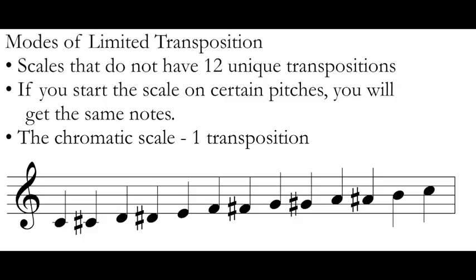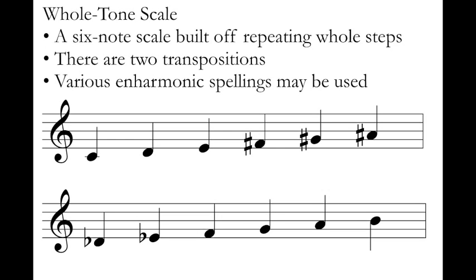Let's talk about some other scales that have a limited number of transpositions that we can find in post-tonal music. The whole tone scale is another scale that has a limited number of transpositions. The whole tone scale is a six-note scale built off of repeating whole steps — every step interval is a major second. There are only two transpositions of this scale: the one that starts on C that I've written here, and then another one a half step apart. If I started a whole tone scale on D, it would have the same six notes as the C whole tone scale. Same for E, same for F sharp. I've used the enharmonic spellings that make the most sense here, but it's not uncommon to see different enharmonic spellings used because there can be some awkward intervals depending on how your whole tone passages go.